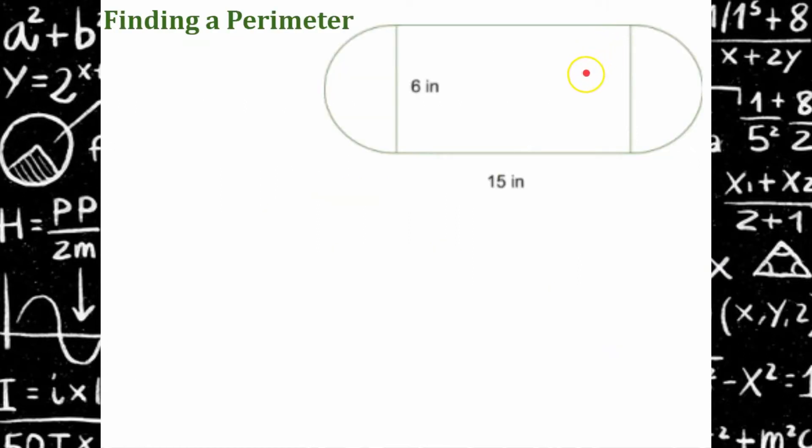We're going to find the perimeter of this composite figure. It is comprised of two semicircles and a rectangle. These two semicircles have a diameter of six inches. When I put this semicircle with this semicircle, I have one complete circle. So let's make a plan.